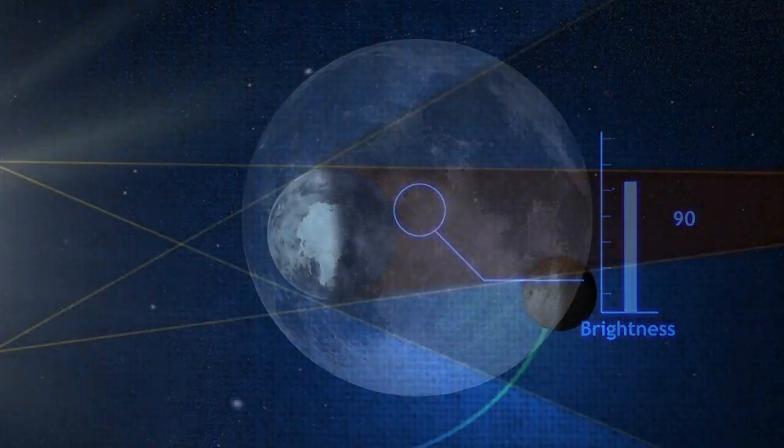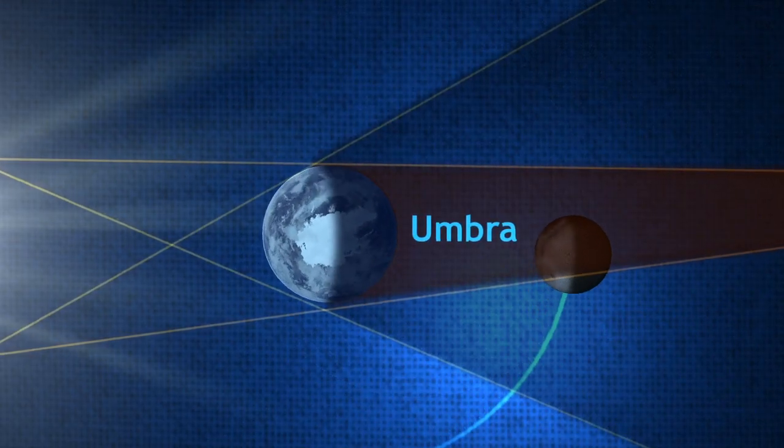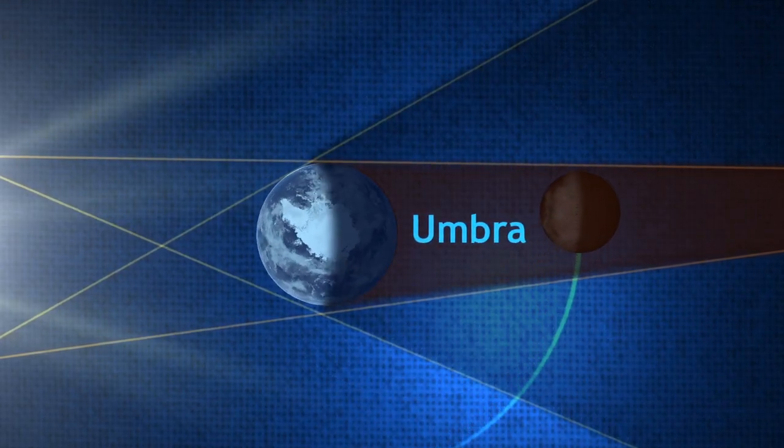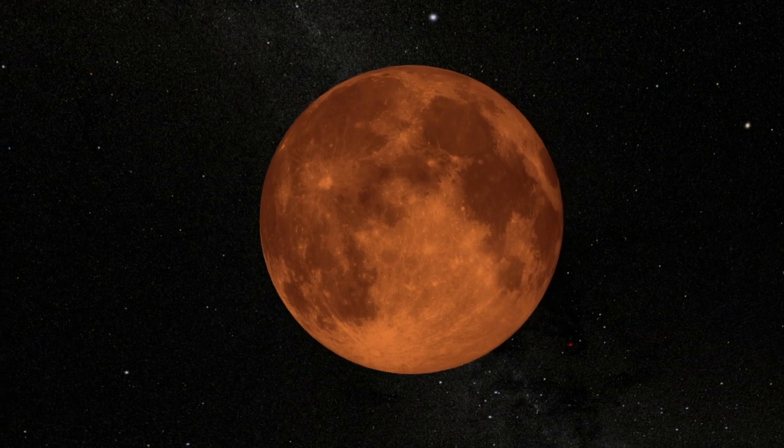As the Moon continues along its path, however, it enters what's called the umbra, where all direct light from the Sun is blocked. But if the Sun is blocked, why does the Moon turn red?